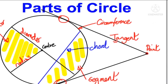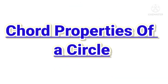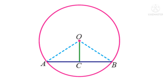Draw a circle with center O. AB is a chord and OC is perpendicular to AB. Here OA equals OB because OA and OB are radii of the circle. The perpendicular from the center of a circle to a chord bisects the chord — it means AC equals CB. We can also say that the line joining the center of a circle to the midpoint of a chord is perpendicular to the chord.